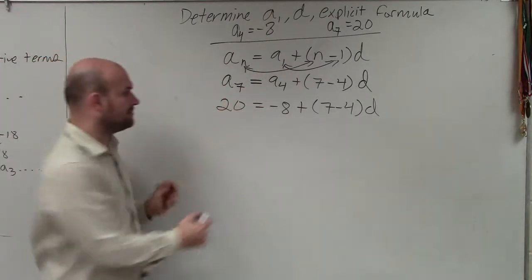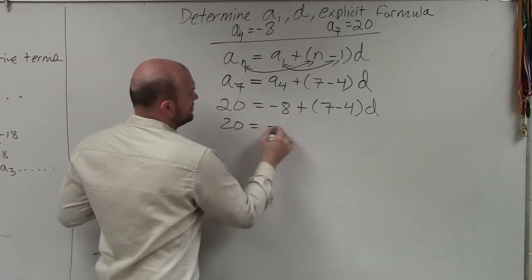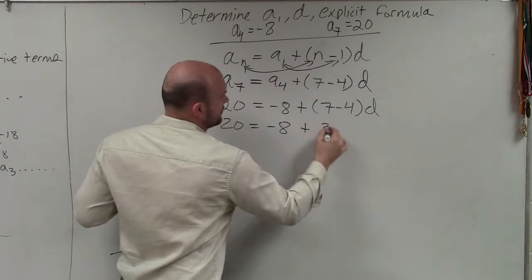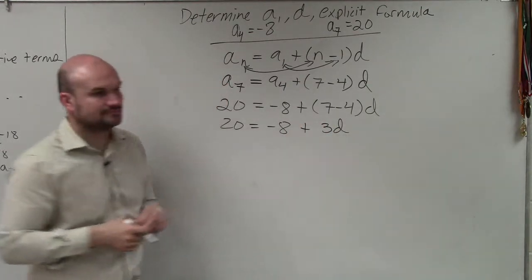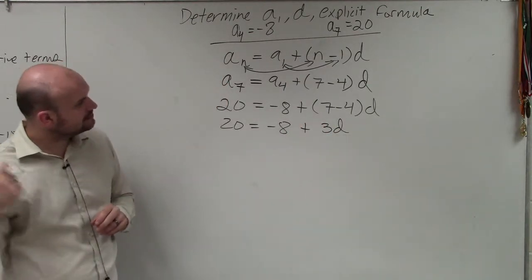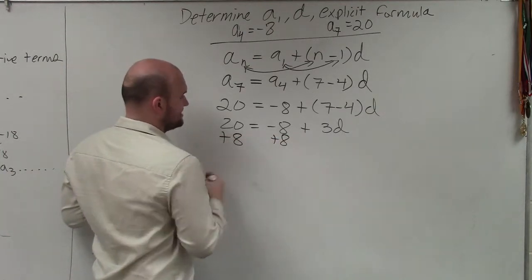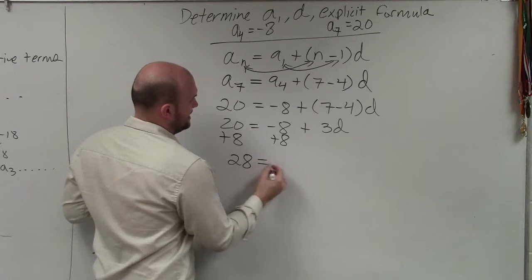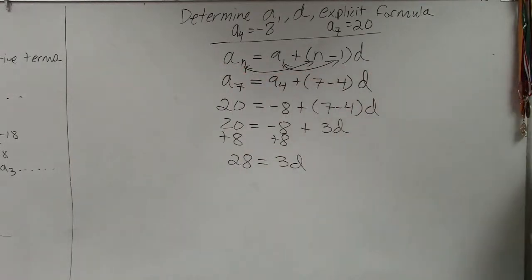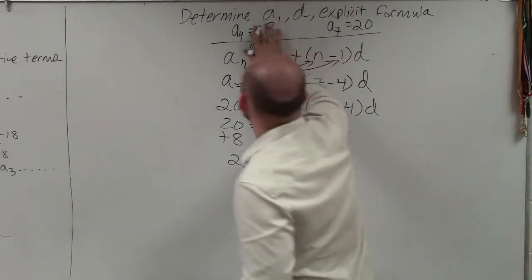So now, let's go and simplify, just like we did in the last problem. 20 equals negative 8 plus 3 times d. Plus 8, plus 8, it's going to be a fraction. 28 equals 3d. Now, a to the 4th and a to the 7th. Oh, that's a positive 8.